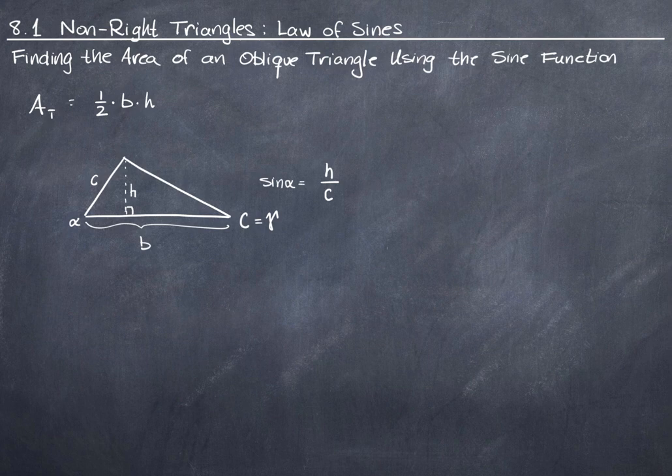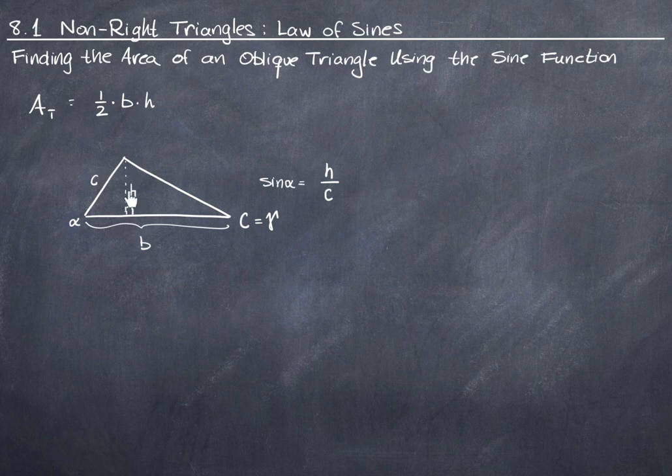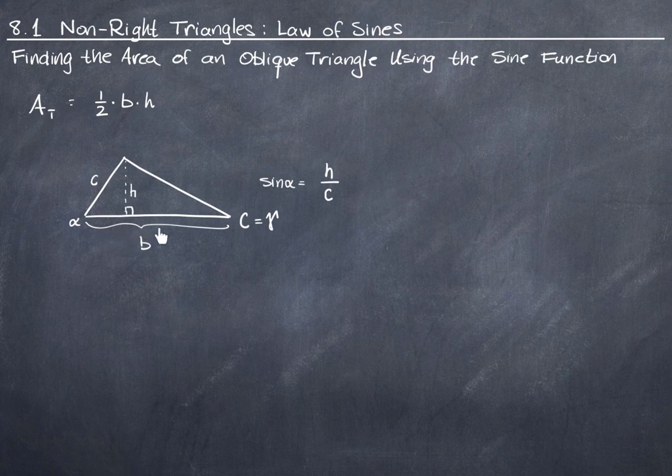Now this might be a little bit confusing at this point because I still have b labeled here and I still have h labeled here, but the implication with this formula here is that we know both b and h. In the case of the formula that I'm about to show you, we're assuming that we know b, but we do not know h. We know one of the angles instead.